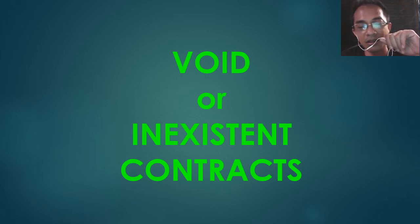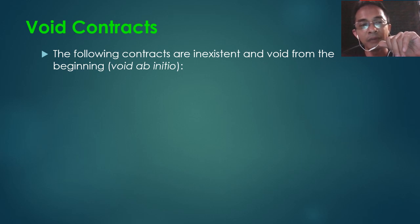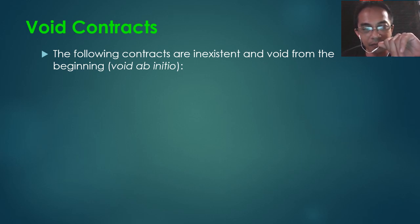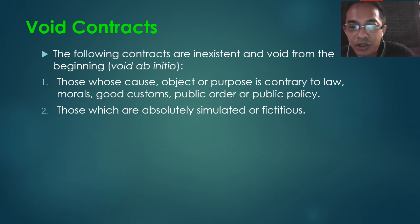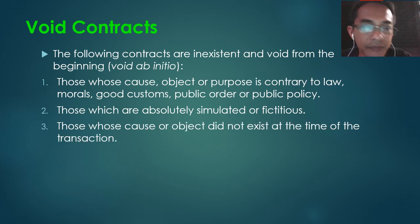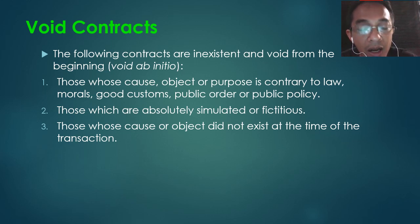Void or inexistent contracts — this is not actually considered a defective contract because a void contract is no contract at all. Void contracts are inexistent and void from the beginning — void ab initio — meaning void from the very start. The following are void: those whose cause, object, or purpose is contrary to law or public policy; absolutely fictitious or simulated contracts; and those where the cause and object did not exist at the time of the transaction, since cause and object are essential elements of a contract.